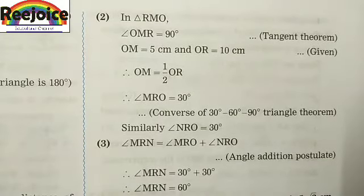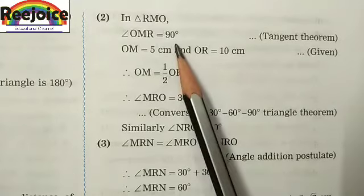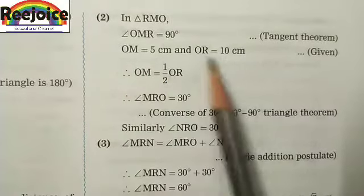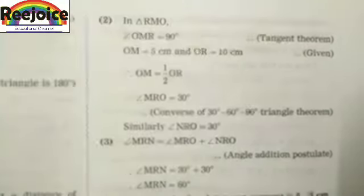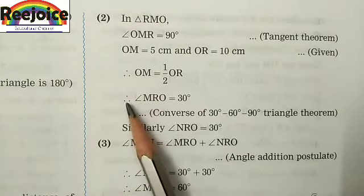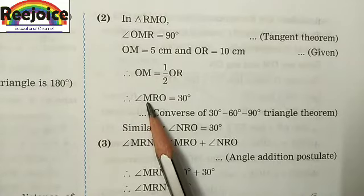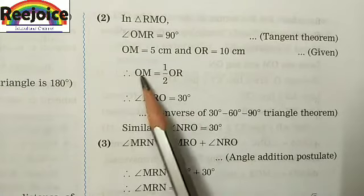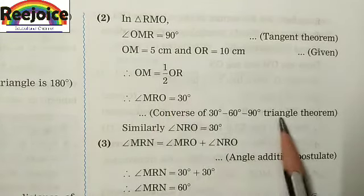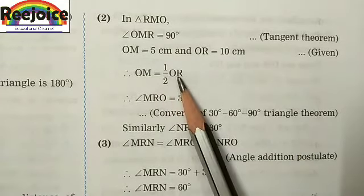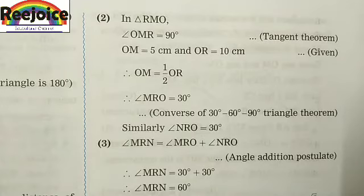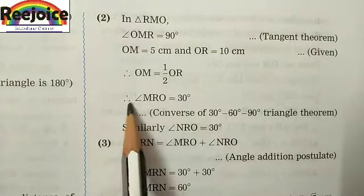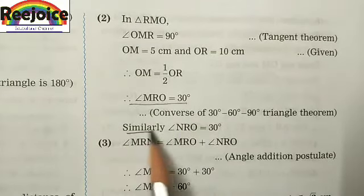For question (2), in triangle MRO, angle OMR is equal to 90 degrees. OM is equal to 5 cm and OR is equal to 10 cm. Therefore OM is equal to half of OR. Since the radius is half the hypotenuse, angle MRO is equal to 30 degrees.